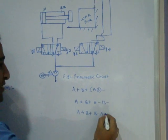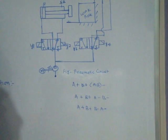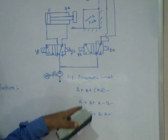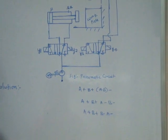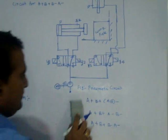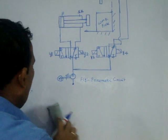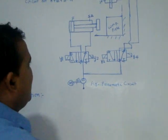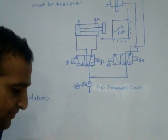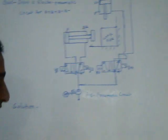But the sequence A plus, B plus, B minus, A minus is very very important and typical. I have already covered the other two problems in previous lectures. Now I'll draw an electro-pneumatic circuit.